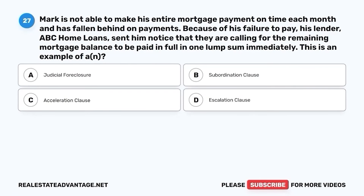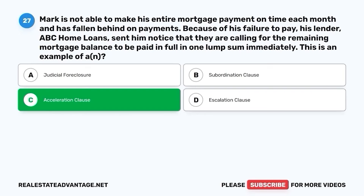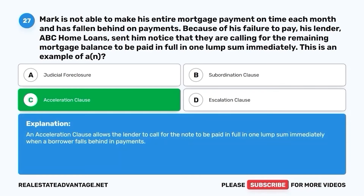Question 27. Mark is not able to make his entire mortgage payment on time each month and has fallen behind on payments. Because of his failure to pay, his lender, ABC Home Loans, sent him notice that they are calling for the remaining mortgage balance to be paid in full in one lump sum immediately. This is an example of: A. Judicial foreclosure. B. Subordination clause. C. Acceleration clause. D. Escalation clause. The correct answer is C. Acceleration clause. An acceleration clause allows the lender to call for the note to be paid in full in one lump sum immediately when a borrower falls behind in payments.